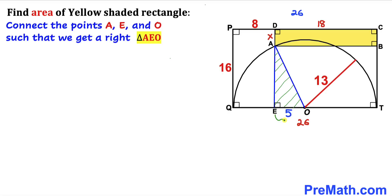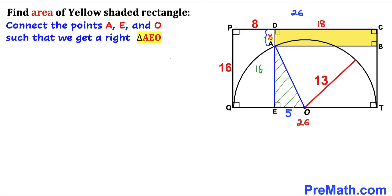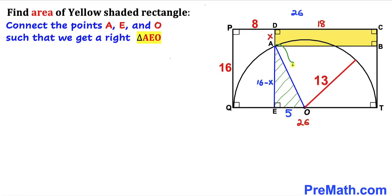In this rectangle, side PQ equals side DE. If PQ is 16 units, DE is 16 units as well. Since side AD is x, side AE is going to be 16 minus x. Finally, AO is the radius of the semicircle, so AO is 13 units. We can see that AEO is a right triangle.